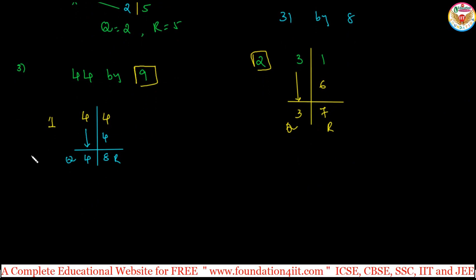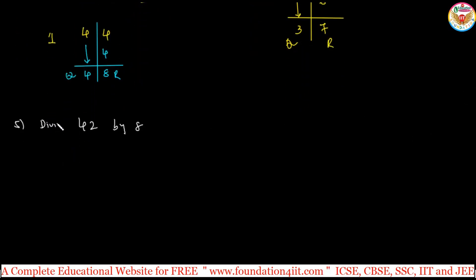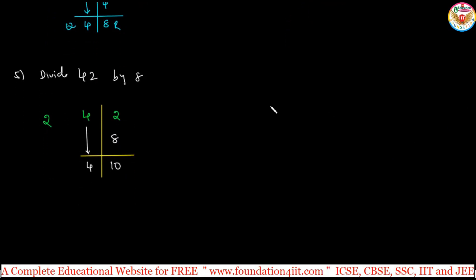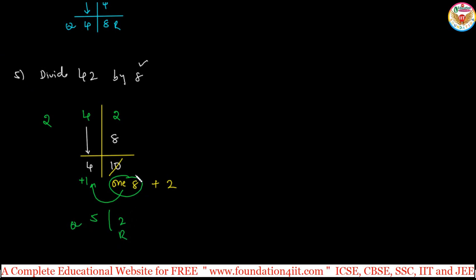In case you get a remainder more than the divisor, for example: divide 42 by 8. Difference is 2 (10 minus 8). Take 4 and 2, draw a line. Take this 4 as it is down. 4 times 2 is 8. Now 8 plus 2 is 10. The remainder 10 is more than divisor 8 — so calculate how many 8s are in 10: one 8, with 2 extra. Add that 1 to the quotient: 4 plus 1 is 5. So 5 is the quotient and 2 is the remainder.